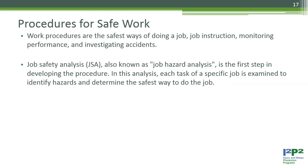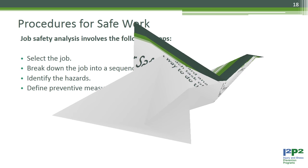Procedures for safe work. Work procedures are the safest ways of doing a job, supporting job instruction, monitoring performance, and investigating accidents. Job safety analysis (JSA), also known as job hazard analysis, is the first step in developing the procedure. In this analysis, each task of a specific job is examined to identify hazards and determine the safest way to do the job.